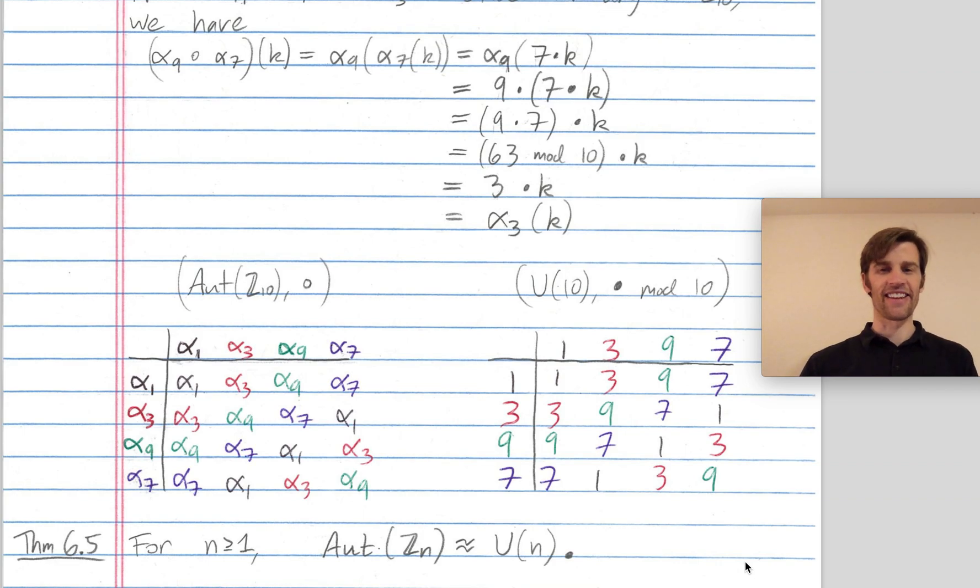Everything we did on this page is not specific to Z_10. So for any integer n, the automorphism group of Z mod n is isomorphic to U(n), the group of units mod n. What are the group of units mod n? They're just the numbers relatively prime to n. Those are also the generators of Z mod n. We saw that the automorphisms of Z mod n were in one-to-one correspondence with the generators of Z_n, because any automorphism of Z_n sends 1 to another generator. We'll just label this group of automorphisms by all those alphas sub somethings, where those somethings are the generators of Z mod n, or in other words, the numbers relatively prime to n.